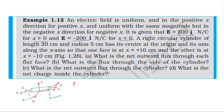Flux through the left face: E dot A equals E times A times cos theta. The angle between the electric field and area vector is 0 degrees, so cos 0 equals 1. Similarly, flux through the right face: electric field and area are in the same direction, so E dot A equals E times A times cos 0 equals E times A.